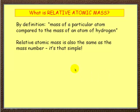These terms have changed over the years so you may have come across these in different form. But basically by definition, the relative atomic mass is the mass of a particular atom compared to the mass of an atom of hydrogen. So if it's got a mass of 4, it means it's 4 times heavier than hydrogen atoms.